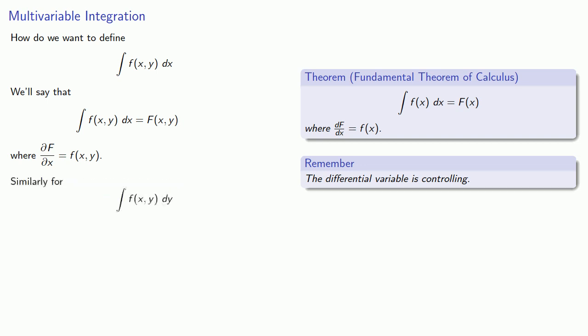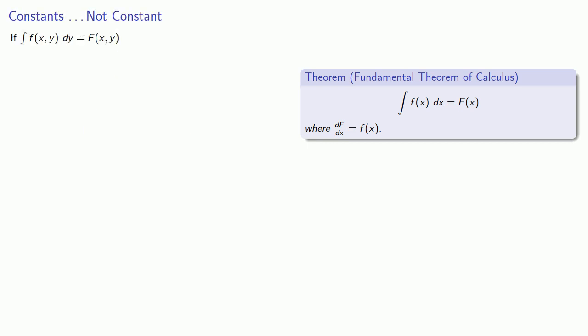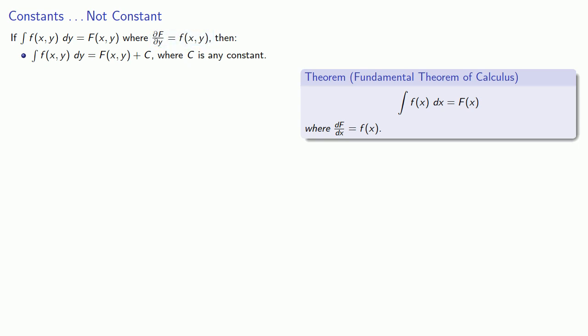Similarly, if our differential variable is y, there are some important subtleties. Suppose our integral uses the differential variable y — we know that the partial with respect to y is our integrand. Just as in single variable calculus, that function could have any added constant, because the only requirement was that the derivative is the integrand. However, since we're taking the partial derivative, that added constant could actually be a function of x only.